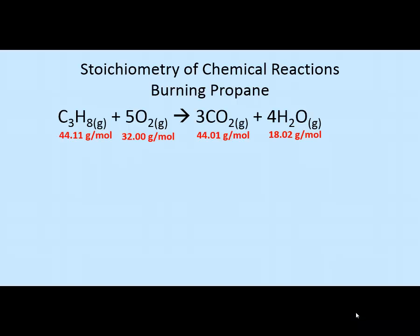Let's think about what this balanced equation is telling us. The coefficients are: 1 for propane (unlisted but assumed), 5 for oxygen, 3 for carbon dioxide, and 4 for water. If a coefficient isn't shown—such as in front of propane—we assume it's 1. Can we relate these coefficients to gram quantities? For example, can we say 1 gram of propane reacts with 5 grams of oxygen to form 3 grams of CO₂ and 4 grams of water? We cannot, because each substance has a different molar mass—a different number of grams per mole—so we can't directly relate gram quantities to coefficients.